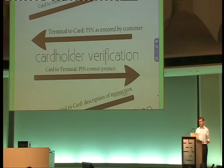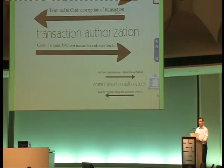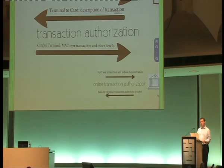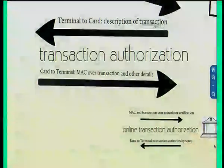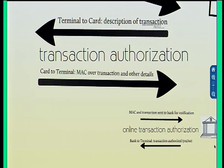That answer isn't authenticated — it's simply yes or no. Then there's transaction authorization, and this is really the core of the protocol. The terminal sends to the card a description of the transaction: the amount, the currency, what type it is, the date, and a few other things. The card then calculates a MAC — a message authentication code, normally triple DES — and sends that to the terminal.